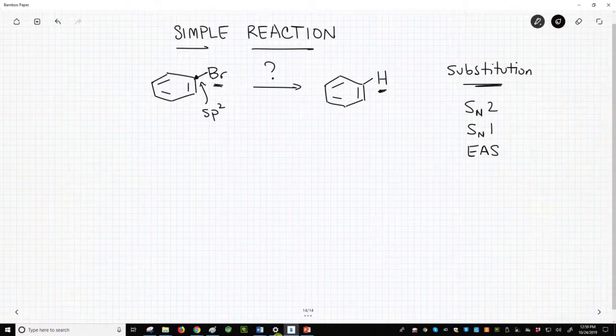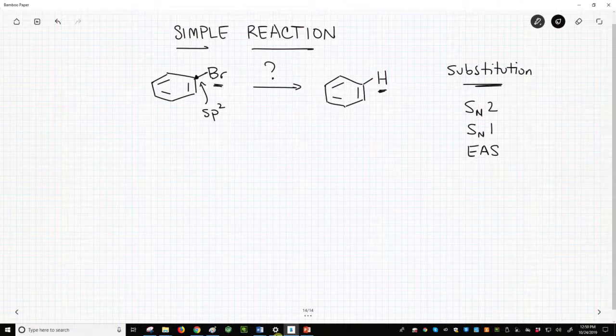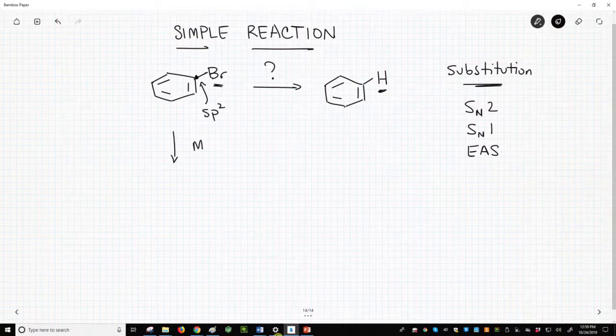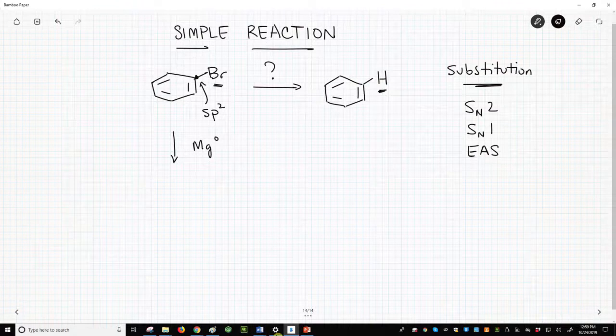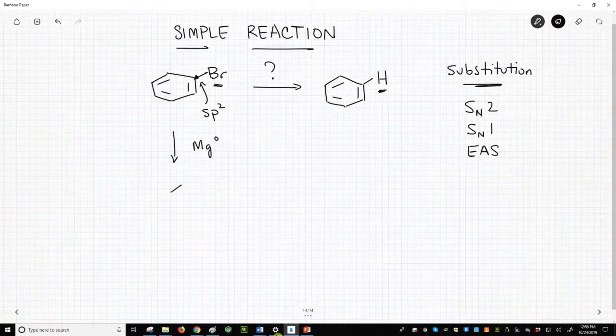Well, we can react the C-Br bond with a metal, like magnesium, and form a Grignard reagent.